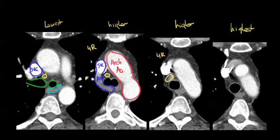The reason this is the highest is because you've got the takeoff of the innominate artery here — so this is your innominate artery, and that is the end of the 4R's. This node right here is going to be your highest 4R. By now we are sitting on the trachea, and the esophagus is still sitting right crammed in this corner.